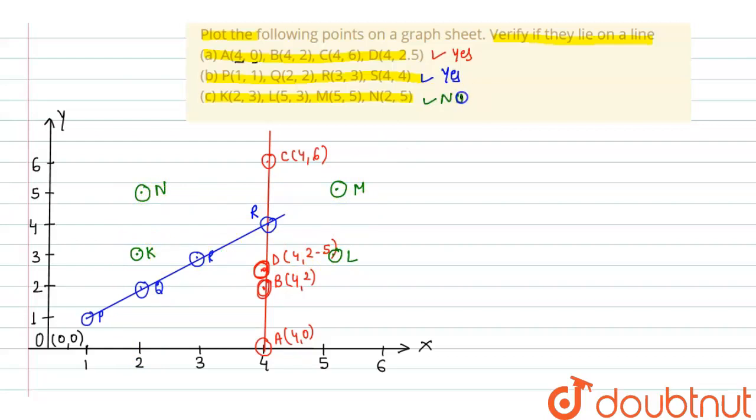So this is no. So we can say finally A part, yes, it is a line. B part, yes, it is also shows a line. And C part, no, this is not a line. Yes, yes, no are the answers. Thank you.